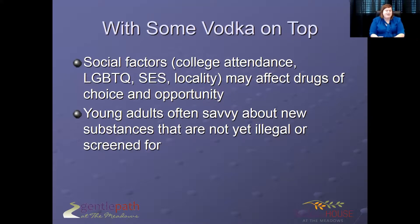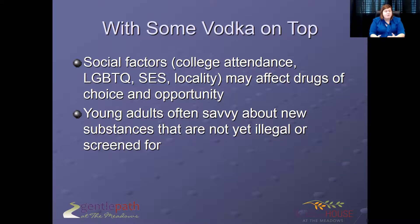Now some important things to know about substance use and young people. A lot of the stats I'll mention are from the National Institute for Drug Abuse, which has lots of good resources. Social factors for young adults are really important — belonging to LGBTQ communities, college attendance, socioeconomic status, and locality may affect drugs of choice or opportunity. In Philadelphia, heroin was the big deal, particularly because people had slid down from Oxycontin and Oxycodone. In other cities it's more alcohol or party/club drugs. Knowing what kids have access to and what's considered cool matters.